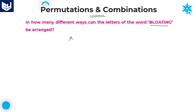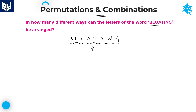Here the word given is BLOATING: B, L, O, A, T, I, N, G. Once count total how many letters are there in this word — 1, 2, 3, 4, 5, 6, 7, 8. Total 8 letters are there. In general, 8 letters can be arranged in 8 factorial ways. We need to arrange all those 8 letters in 8 places; that happens in 8 factorial ways.